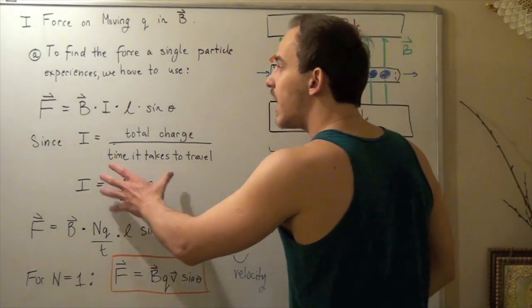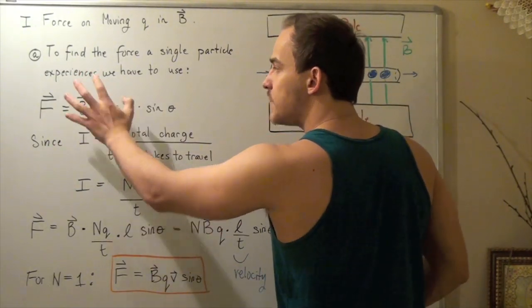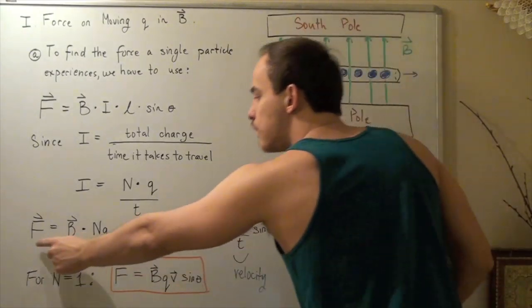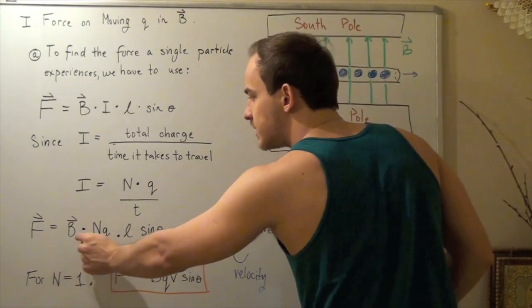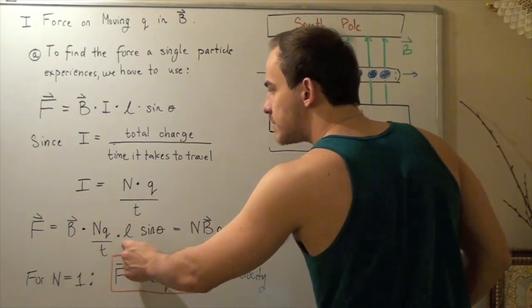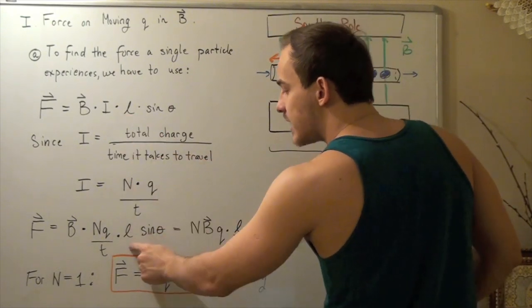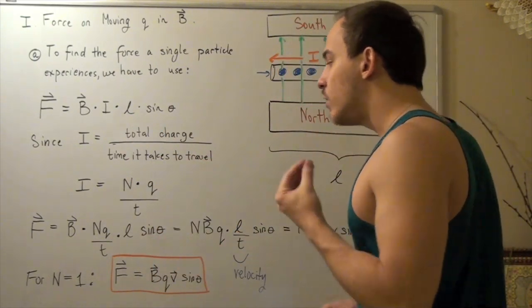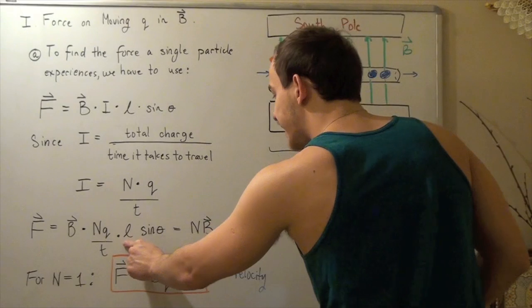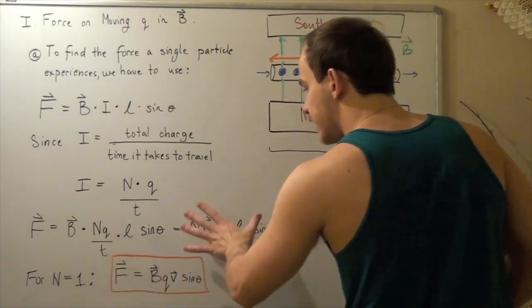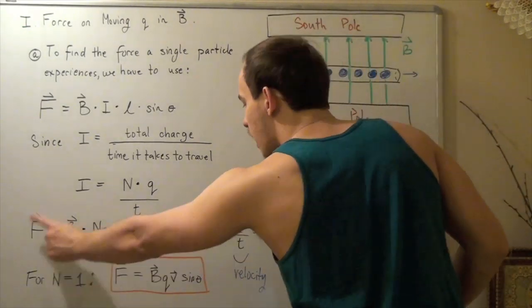I take this and I plug it into my I in this equation. And I get force is equal to my magnetic field times this whole guy times L, the distance, times sine theta. Now, let's combine the L and the T in this manner. And let's put my N up in front. So equals N times B times Q.